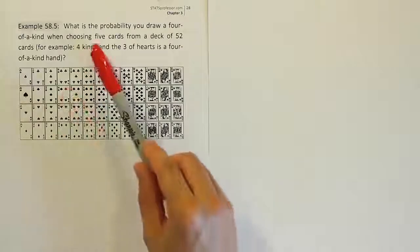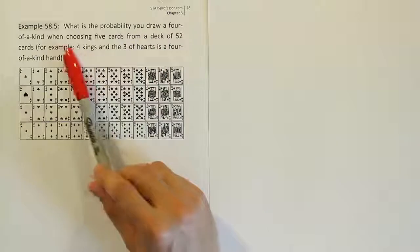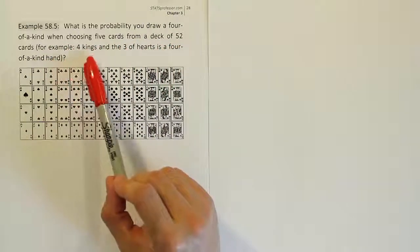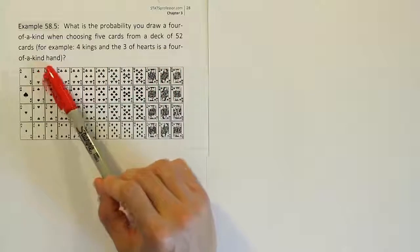Example 58.5. What is the probability you draw a four of a kind when choosing five cards from a deck of 52 cards? For example, four kings and the three of hearts is a four of a kind hand.